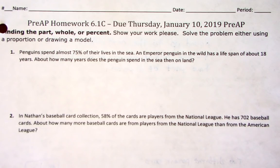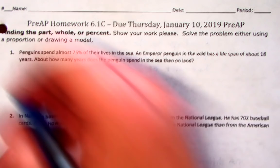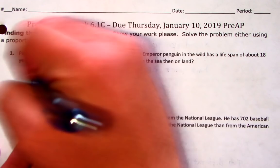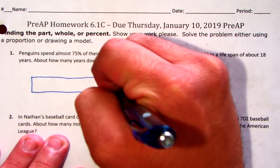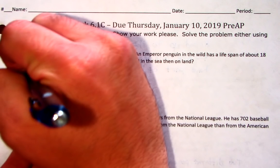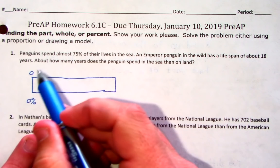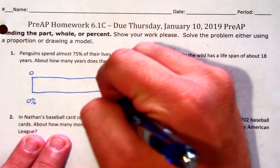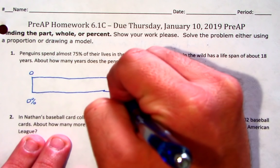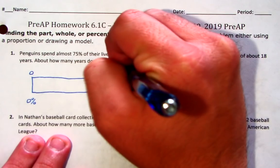Penguins spend about 75% of their lives in the sea. An emperor penguin in the wild has a lifespan of about 18 years. About how many years does the penguin spend in the sea versus on land? The first thing I'm going to do is set up my percent bar. Remember, the percent bar has four things that will never change: your starting spot, which is zero, your finish line, which is 100%, and your whole, which will never change.